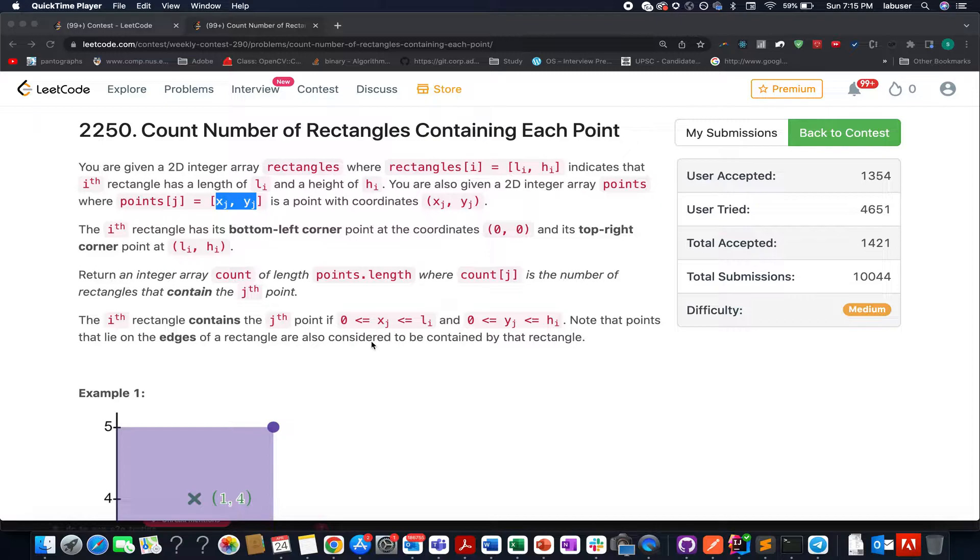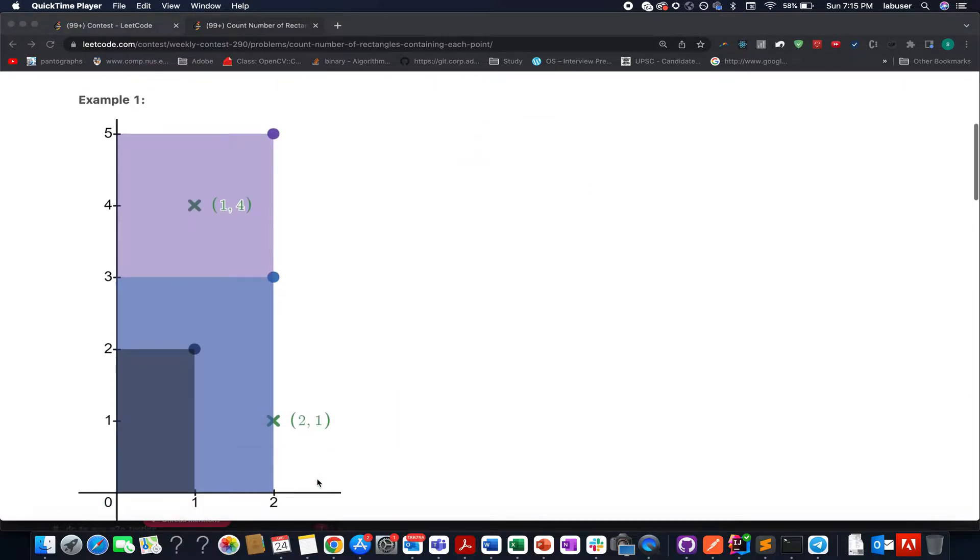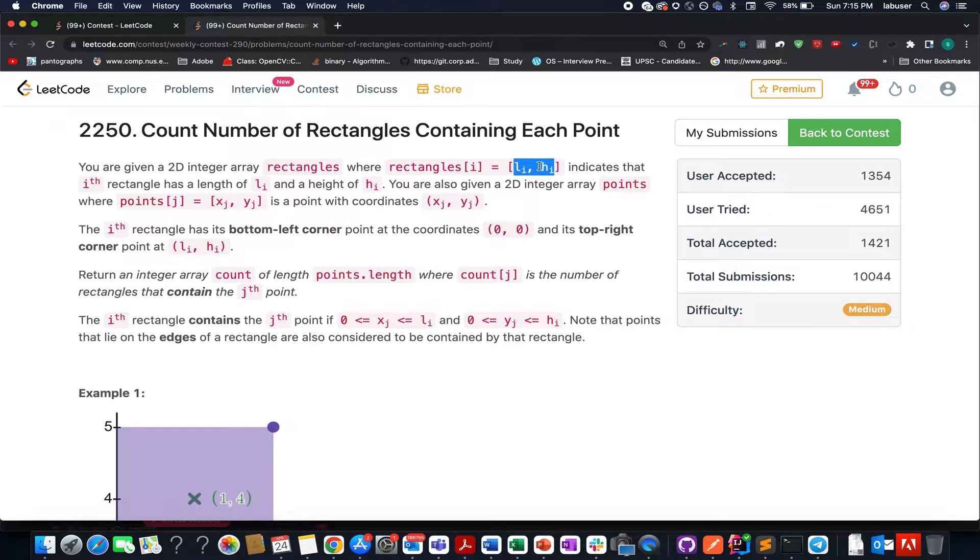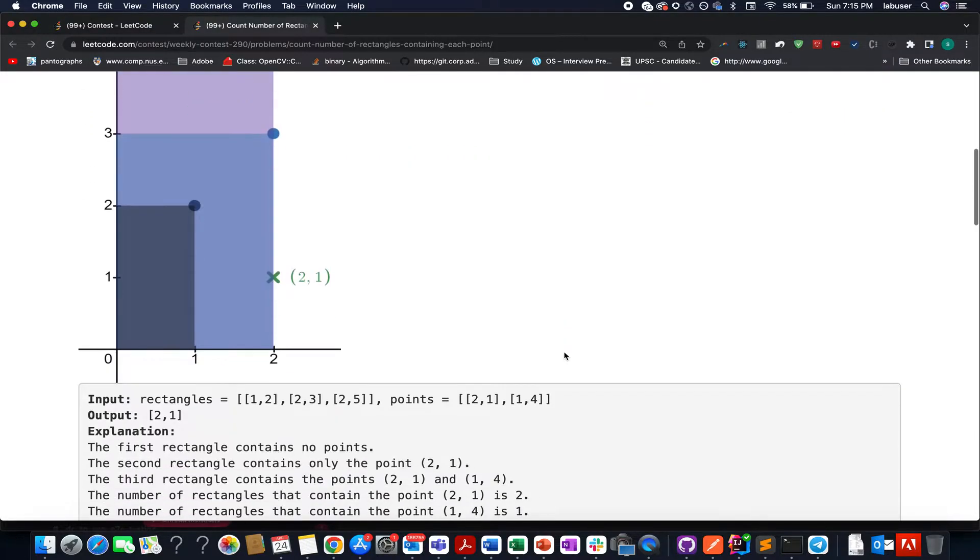Here in this question we are given an array of rectangles wherein each rectangle spreads from the 0,0 index up till length l and height h index values. Along with this we are also given a points array. We need to identify the number of rectangles that contain each point given in the array. So let's walk through an example.